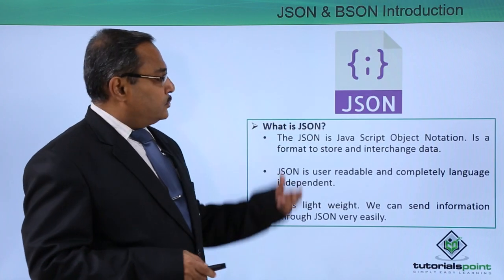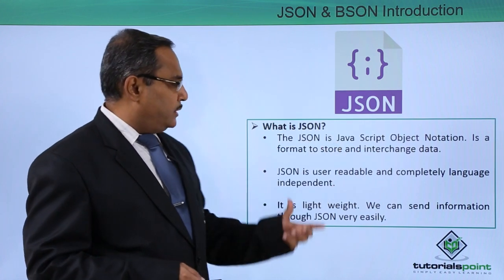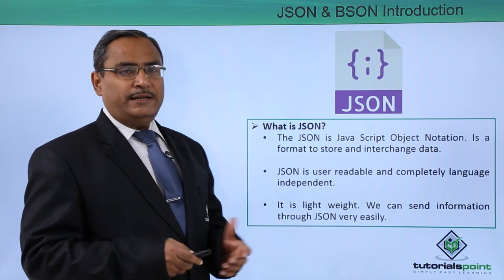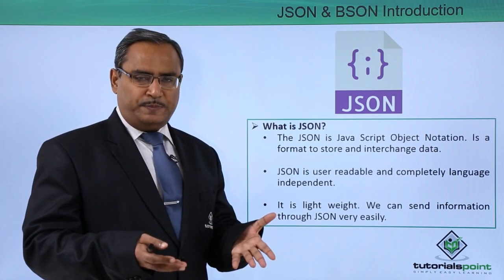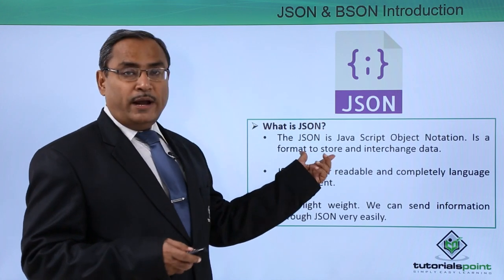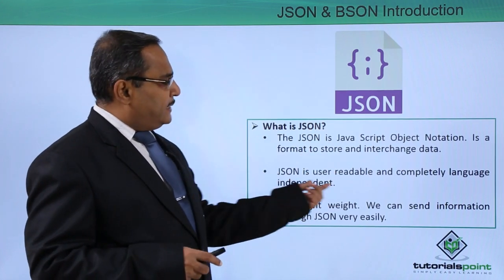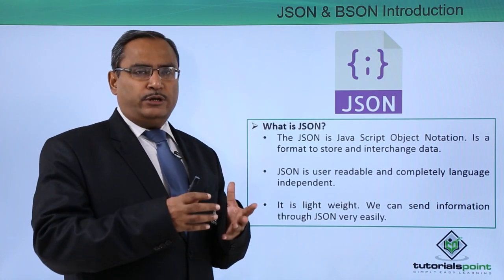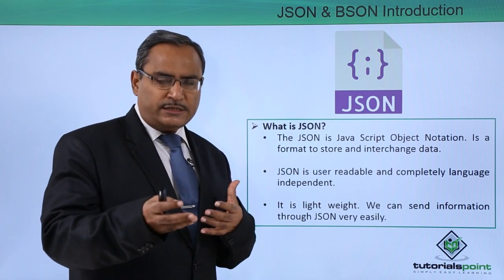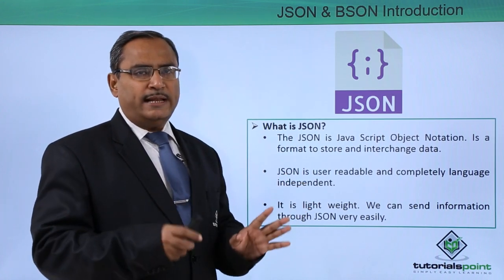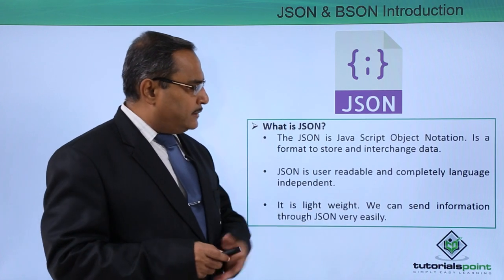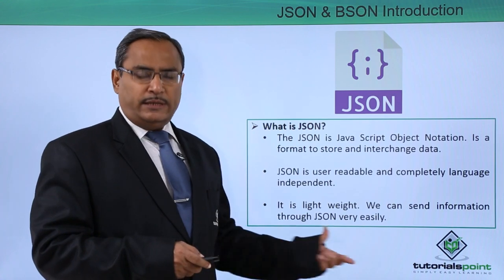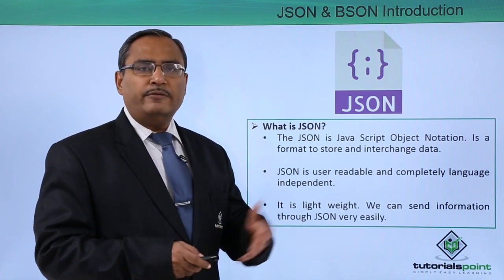So what is JSON? JSON — JavaScript Object Notation — is a format to store and interchange data. This format is human readable, and it is a key-value pair format. JSON is user readable and completely language independent, meaning it is independent of whichever language or application you use to read the data. It is lightweight and we can send information through JSON very quickly and very easily. Nowadays JSON is getting more and more priority for data transfer.